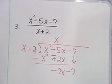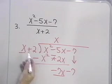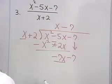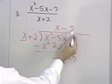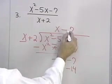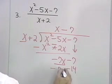I divide x into negative 7x by asking what I can multiply x by to get negative 7x, and the answer is negative 7. Now, I multiply negative 7 times positive 2, negative 14, and negative 7 times positive x, negative 7x.